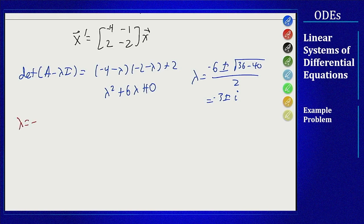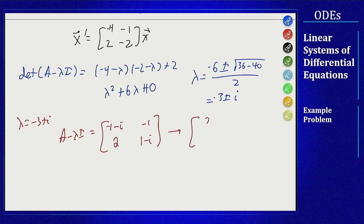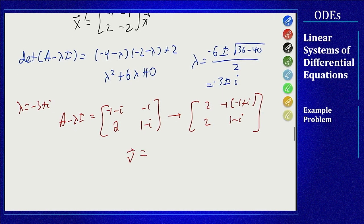So lambda equals minus 3 plus i. A minus lambda I will equal negative 1 minus i, negative 1, 2, 1 minus i. Multiply the first row by negative 1 plus i to see what happens, and we get 2, negative 1 minus i, 2, 1 minus i, and those are the same. We're good, which means we get an eigenvector here as 1 minus i and minus 2.